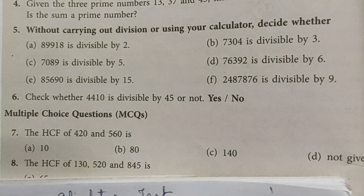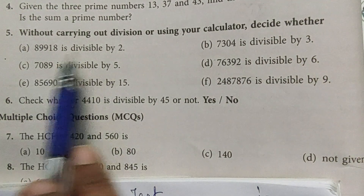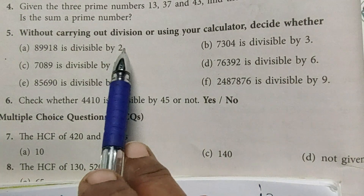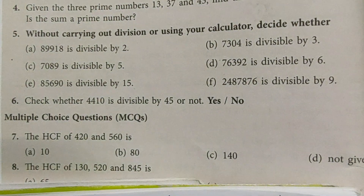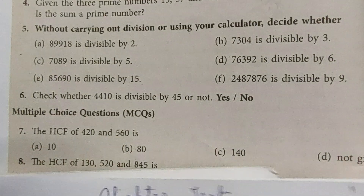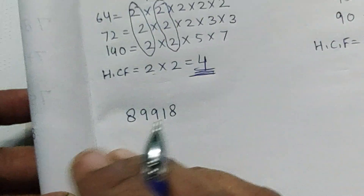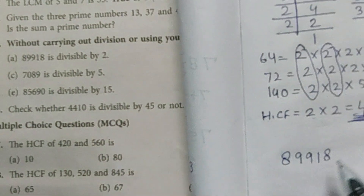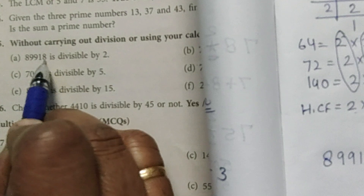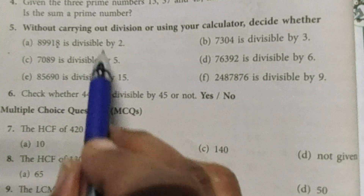Question number 5: without carrying out division or using a calculator, decide whether the numbers given are divisible by the second number or not. First: 8,99,918 — is it divisible by 2? Yes, because the last digit on the unit place is 8, and 8 is divisible by 2, so the number is divisible by 2.